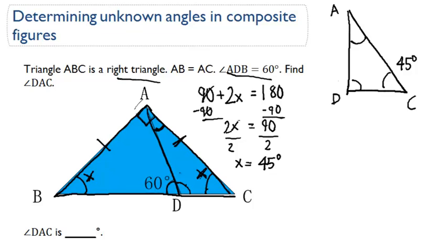We're going to call this angle down here angle ADC. We know since angle ADC is adjacent to this 60 degree angle, we know that 60 plus Y is equal to 180. If we subtract both sides by 60, we're left with Y equals 120.